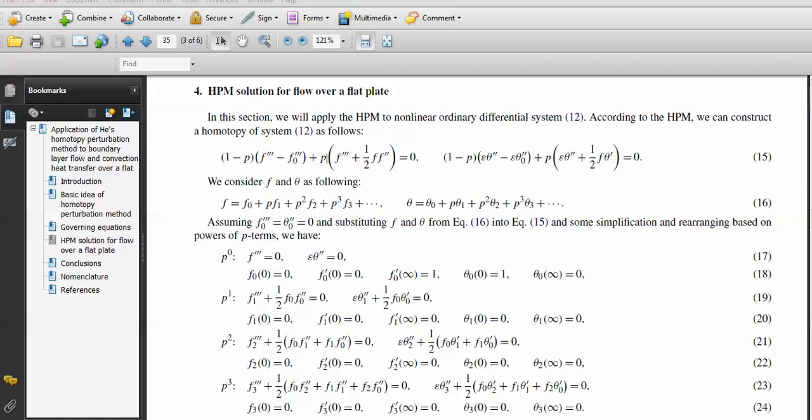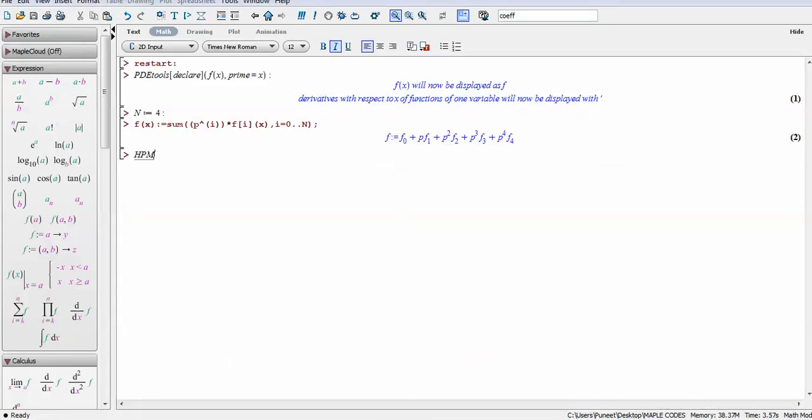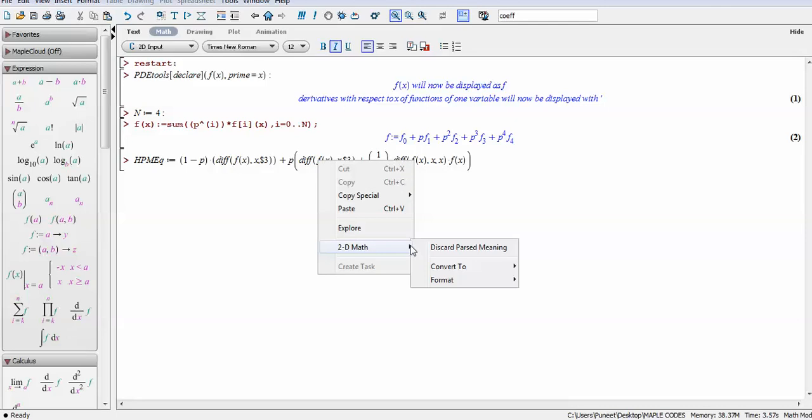So practically we wish to write this equation. Now we will type this equation. So I write HPM equation say that hpm_eq is 1 minus p multiplied by the differentiation of f(x) with respect to x three times. You can write either 3 times x or use this symbol for the third derivative. Then multiply by p. Same thing we will write here plus 1/2 of differentiation of f(x) with xx.